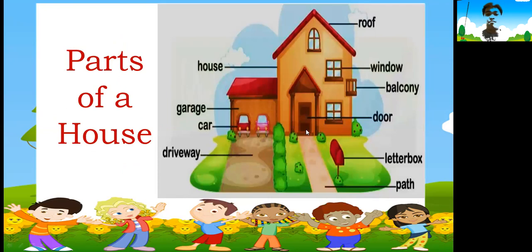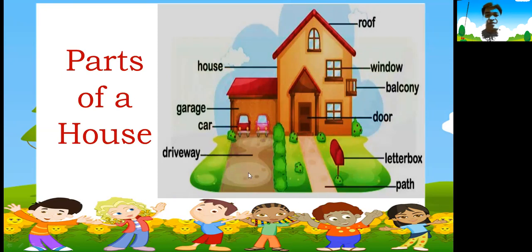I hope you can remember those because now we will learn about the parts of the house — day-to-day life vocabulary. We start with the roof, to cover us from the sun and rain. Window. Balcony. Door, to protect us inside the house. Letterbox. Path or pathway — like a driveway. Car — if you have one or two or more cars, it's like the house of the car — we call it garage. And of course, your house.